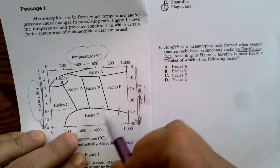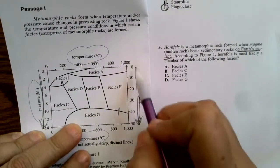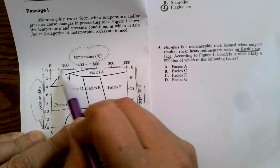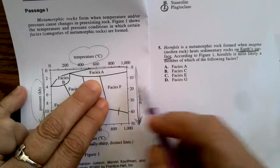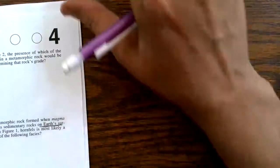And the only one with a depth of zero is facies A, and so we have A as the answer. Alrighty, done with passage one.